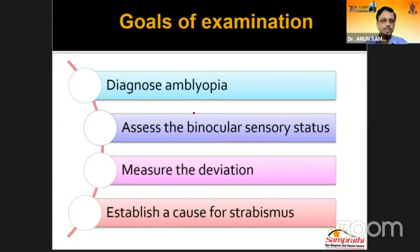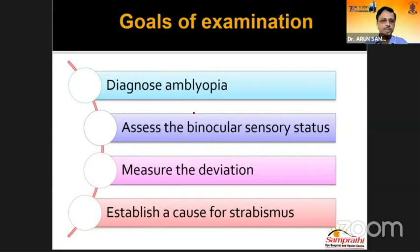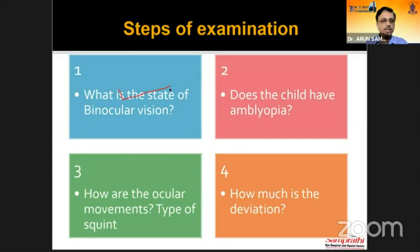Coming to the examination proper, we need to find out what information to gather regarding the strabismus. First is to diagnose amblyopia. Second is to know the status of binocular vision. Third is to measure the deviation. Fourth is to establish a cause for the strabismus. The steps of examination: first check BSV, next diagnose amblyopia, then check motility and cover test, and finally measure the deviation.